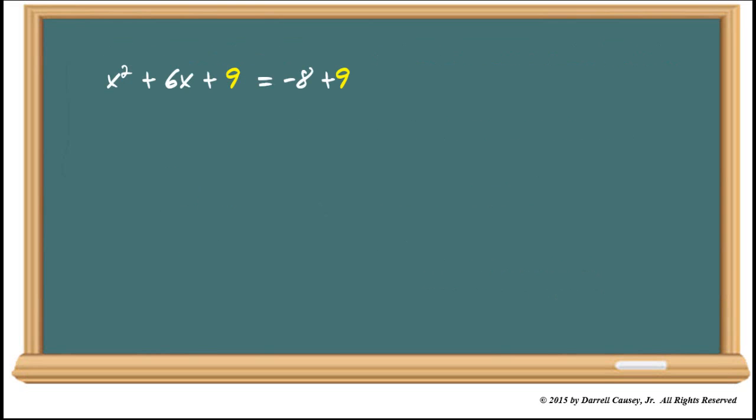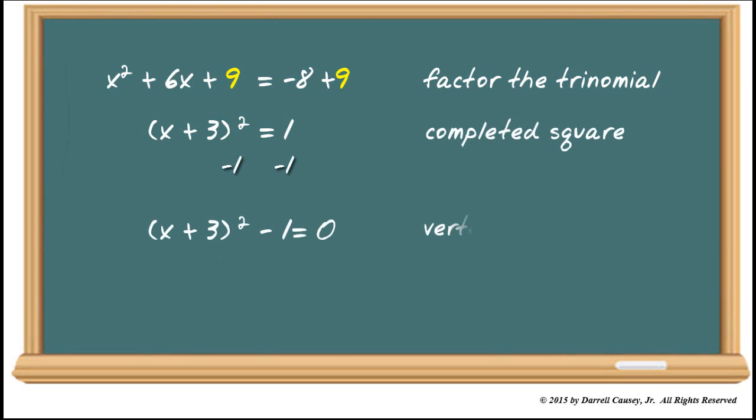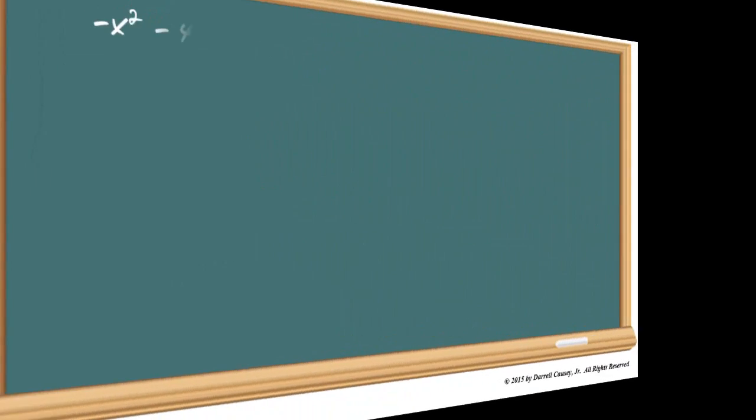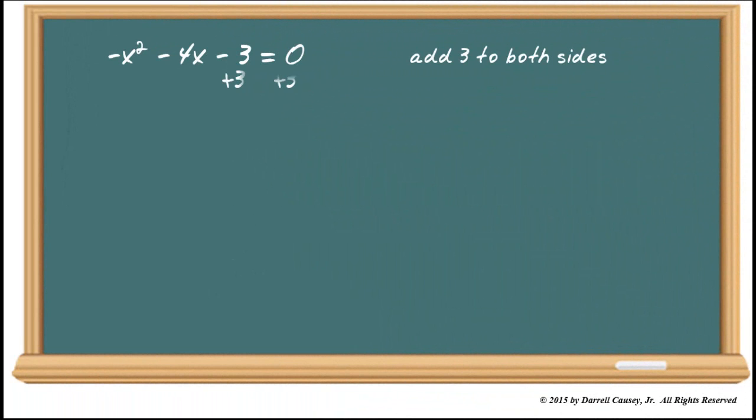So we add 9 to both sides. And then we simplify by taking or factoring the left side and, of course, combining the right side. X plus 3 quantity squared equals 1. That's the square completed. And you'll notice with just minusing 1 from both sides, we could end up with the vertex form.